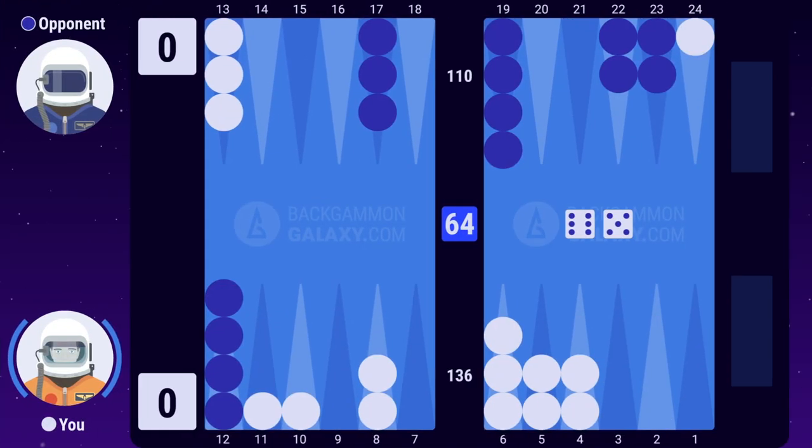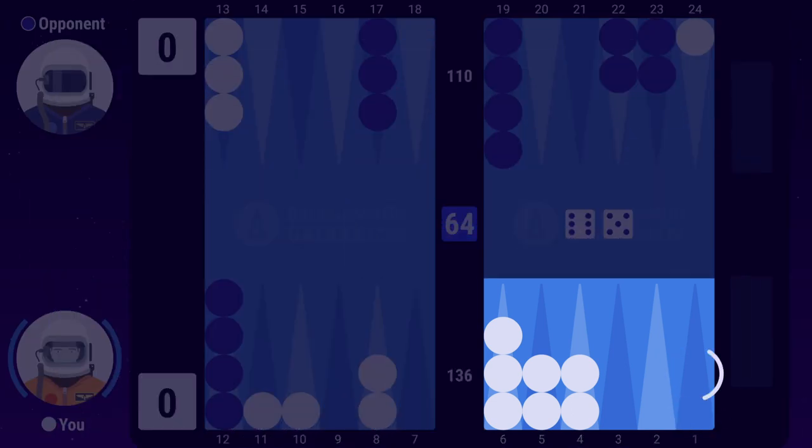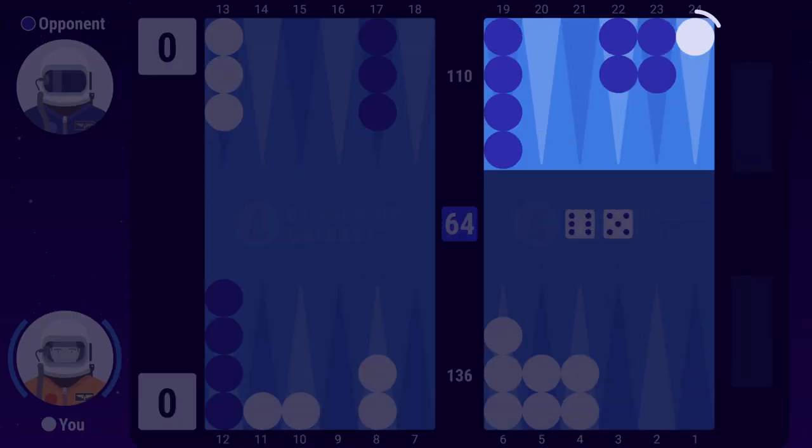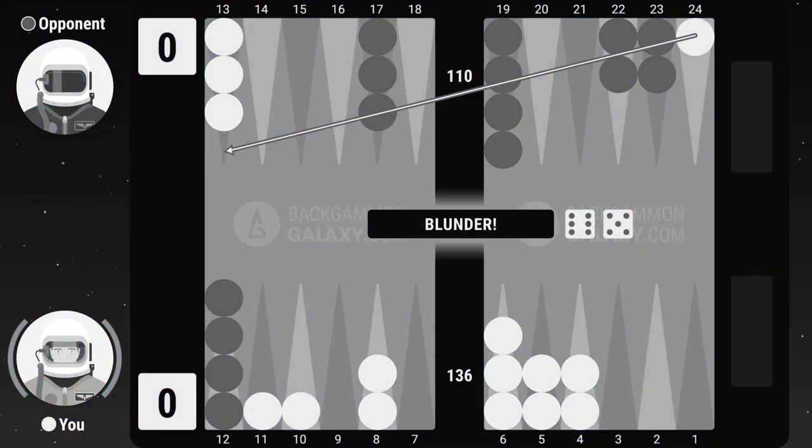Let's take a look at how to play this 6-5. Your opponent has escaped his backmost checkers while you're still trapped with one checker on the 24 point. If you run with this checker by playing 24 to 13, you'll be in a straight race with 15 pips down. That's a losing proposition.